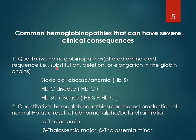Either one amino acid is substituted by another, or it is entirely deleted, or some extra amino acids are incorporated — elongating the globin chain. The thalassemias — alpha and beta, including beta thalassemia major and beta thalassemia minor — are common examples of quantitative hemoglobinopathies, where decreased production of normal hemoglobin occurs as a result of an abnormal alpha-to-beta chain ratio.